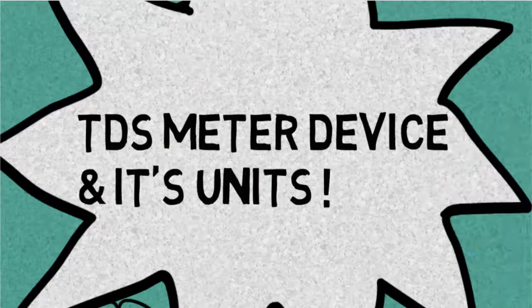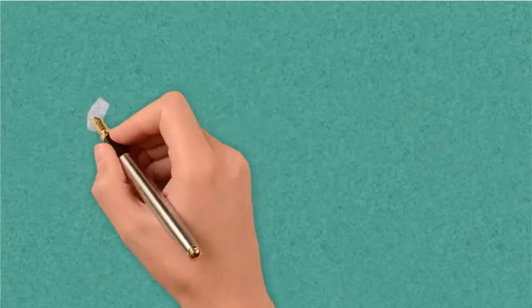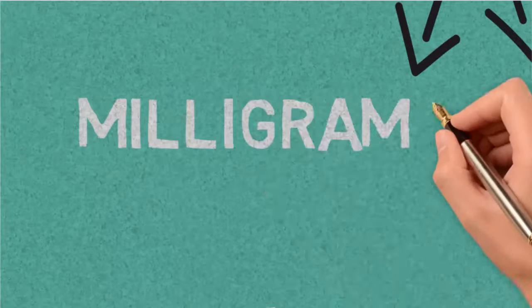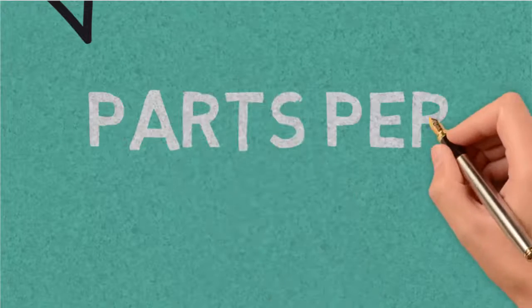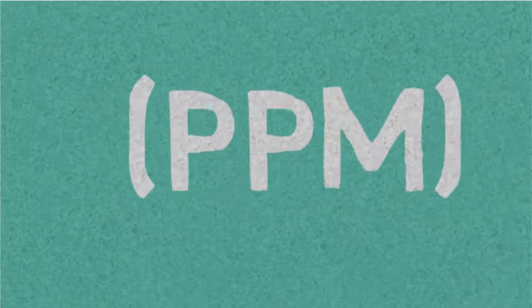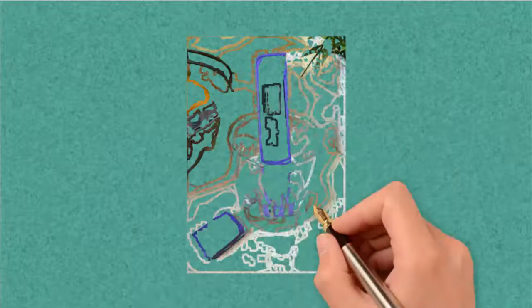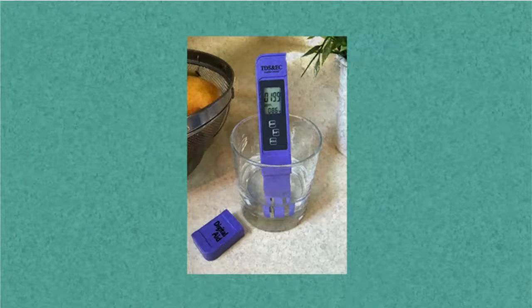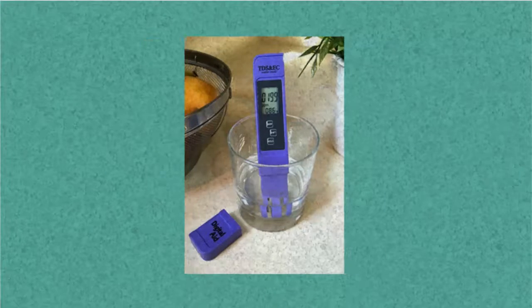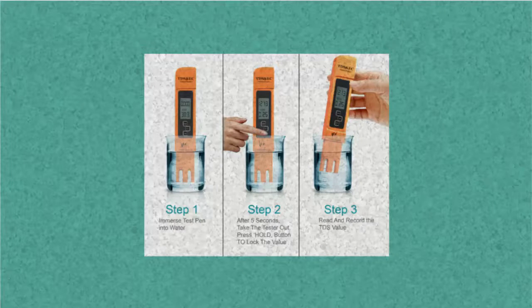TDS meter device and units: TDS is expressed in units of mg per unit volume of water milligram per liter or also referred as parts per million (ppm). TDS meters display the TDS in parts per million. 1 ppm indicates 1 mg of dissolved solids per kilogram of water.